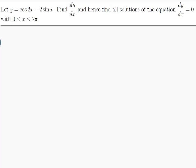The question is: let y be equal to cos(2x) minus 2sin(x). Find dy/dx and hence find all solutions of the equation dy/dx equals 0 with 0 is less than or equal to x which is less than or equal to 2π.